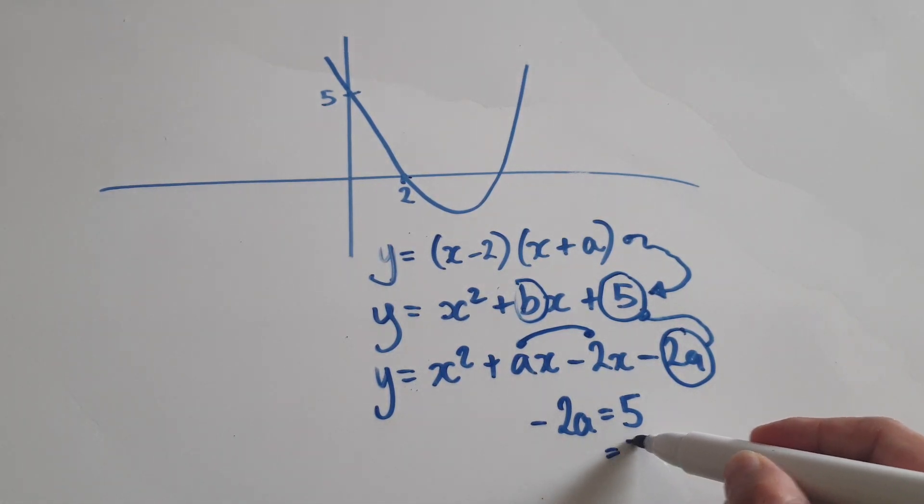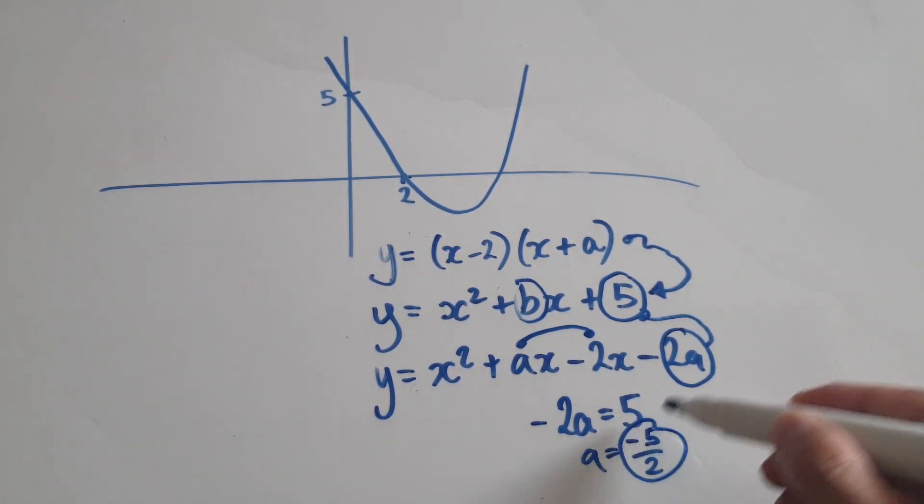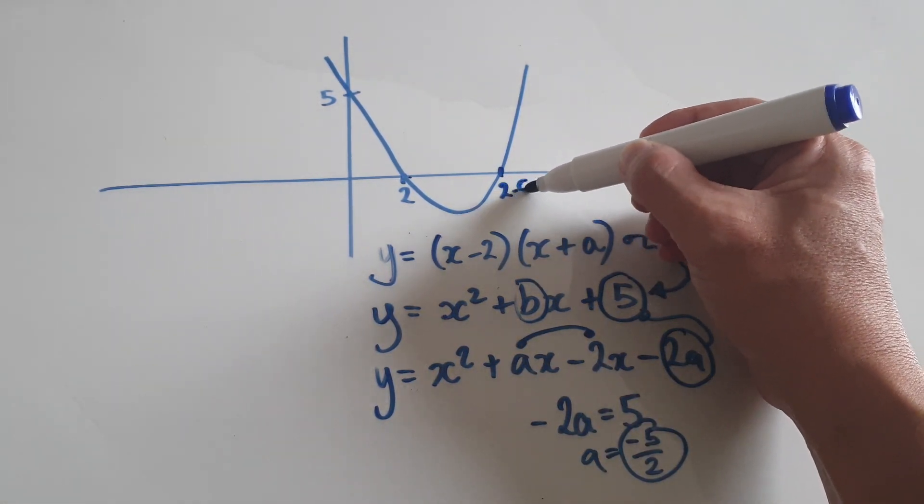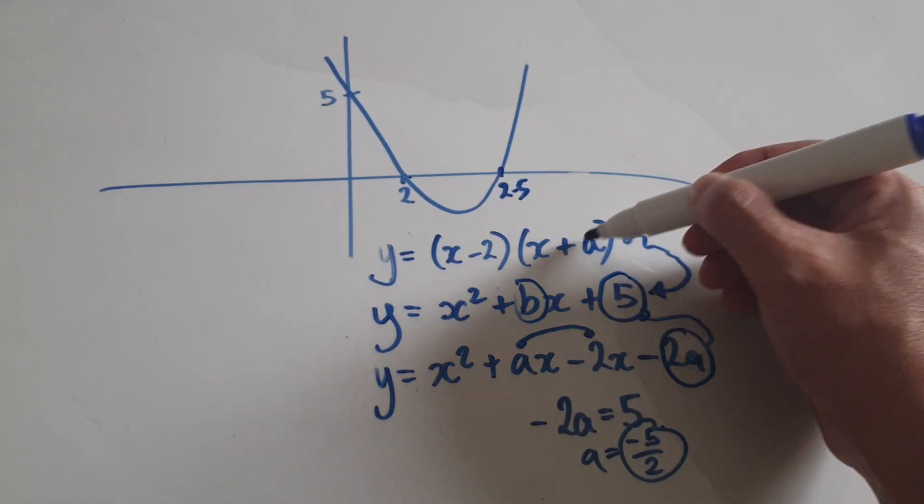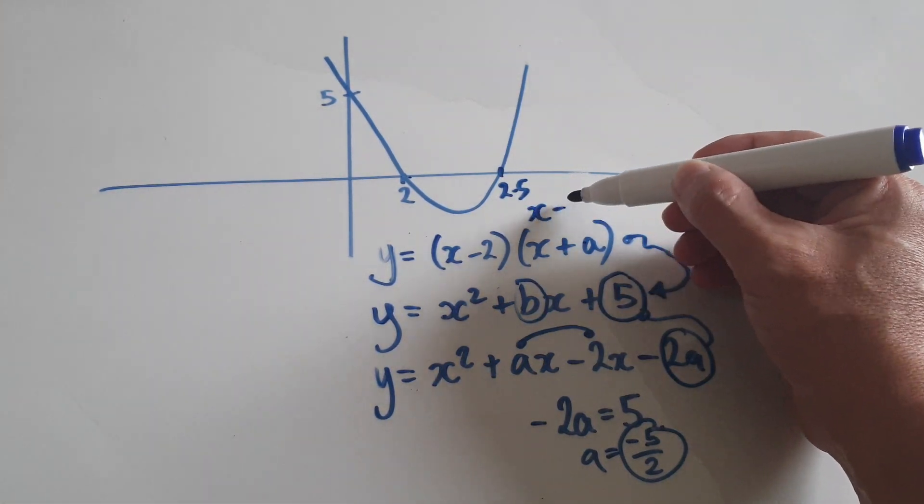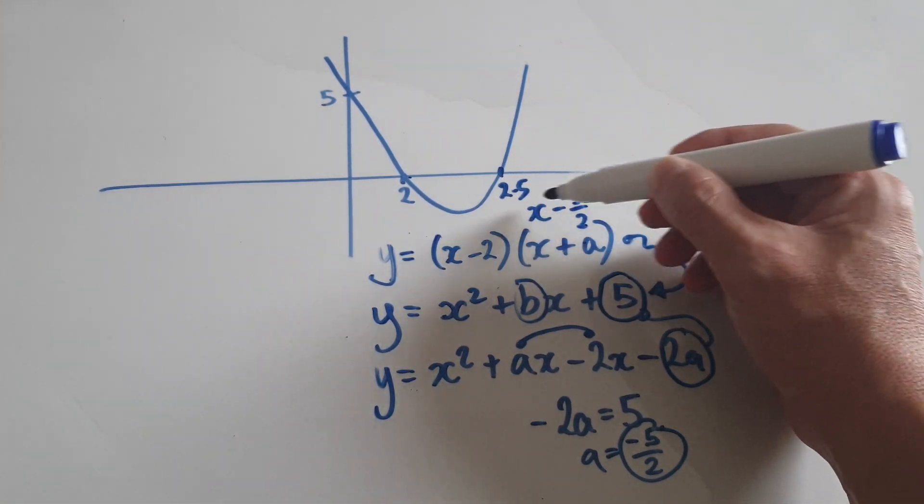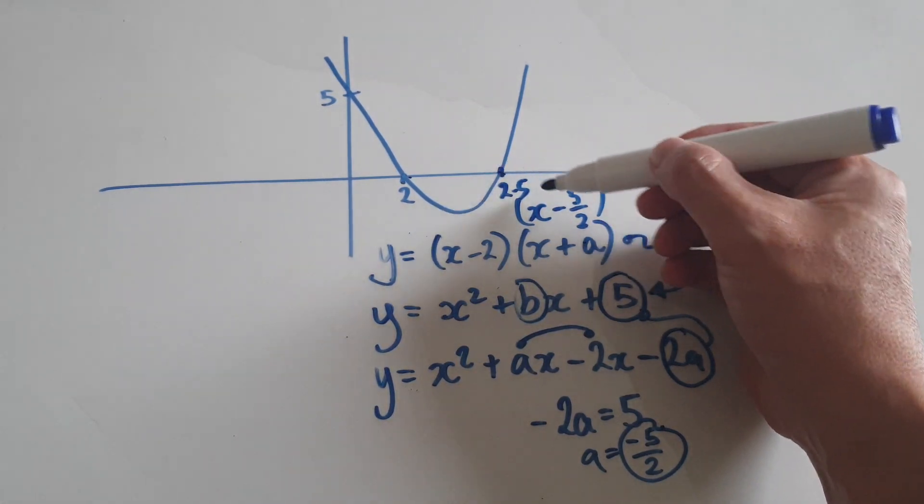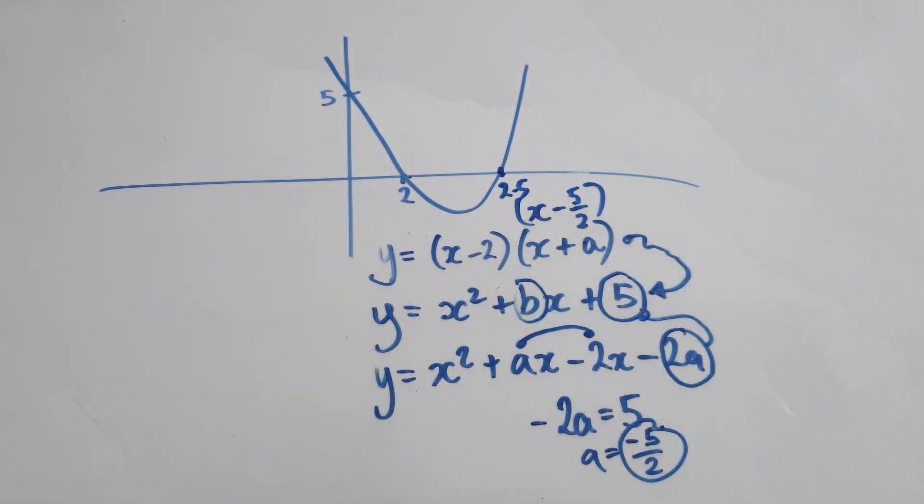So, now a must be negative 5 over 2. That is your a. So, what this means is this is 2 and a half, 2.5 here because you would put this into here. So, that would be x minus 5 over 2. You see, you can tell the roots, one of the roots is 2 and a half.